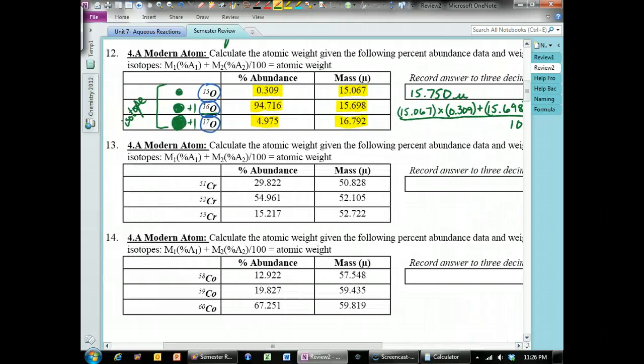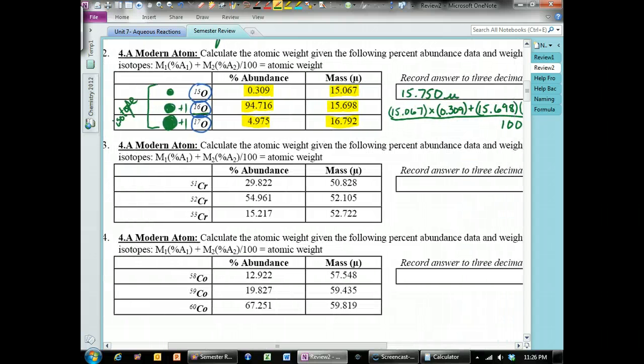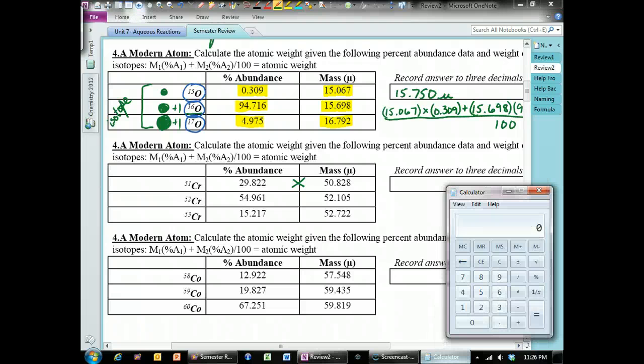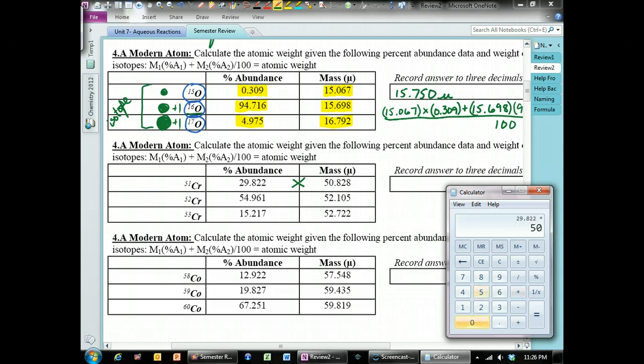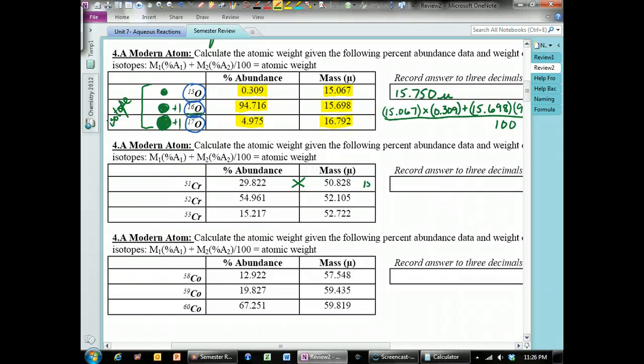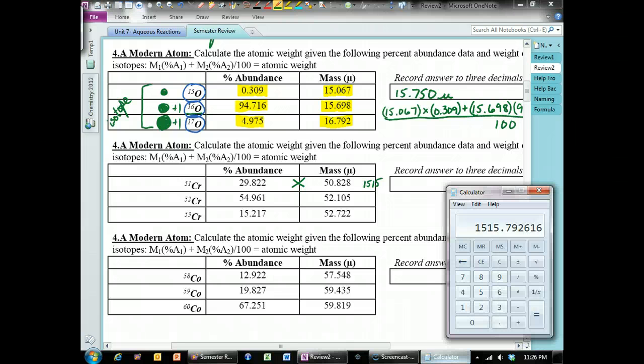All of these are recorded or calculated the same way. You're going to take these two numbers and multiply them by each other. And the answer that you get when you multiply the percentage times the mass. I'm going to have 50.828 in this example. That gives you a mass of all those isotopes, atoms of that isotope.